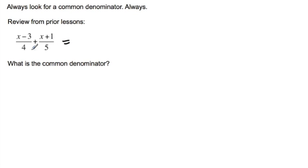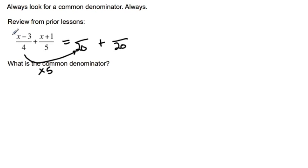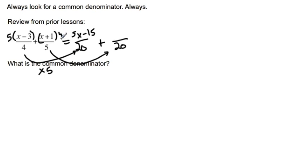Let's take a look at this example. We have four and five as denominators, so our common denominator is going to be twenty. In order to get from four to twenty, I had to multiply by five, which means I take my numerator and multiply by five, giving me five-x minus fifteen. For the second denominator, to get from five to twenty I multiply by four, so I multiply to get four-x plus four.